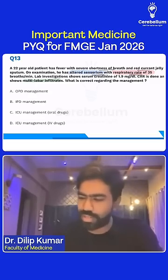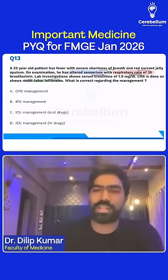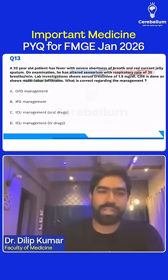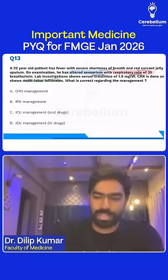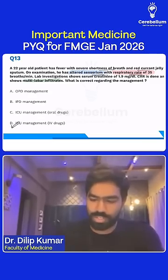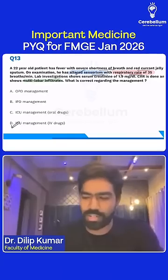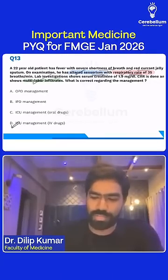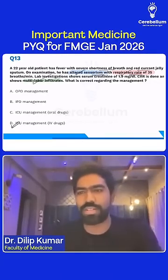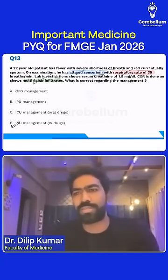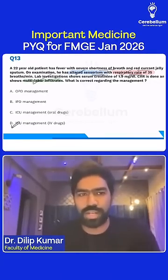So the exact question that came: what is correct regarding the management? This patient should be going to the ICU straight, because you have three minor criteria — altered sensorium, tachypnea, and multilobar infiltrates. So the patient must ideally be in the ICU.